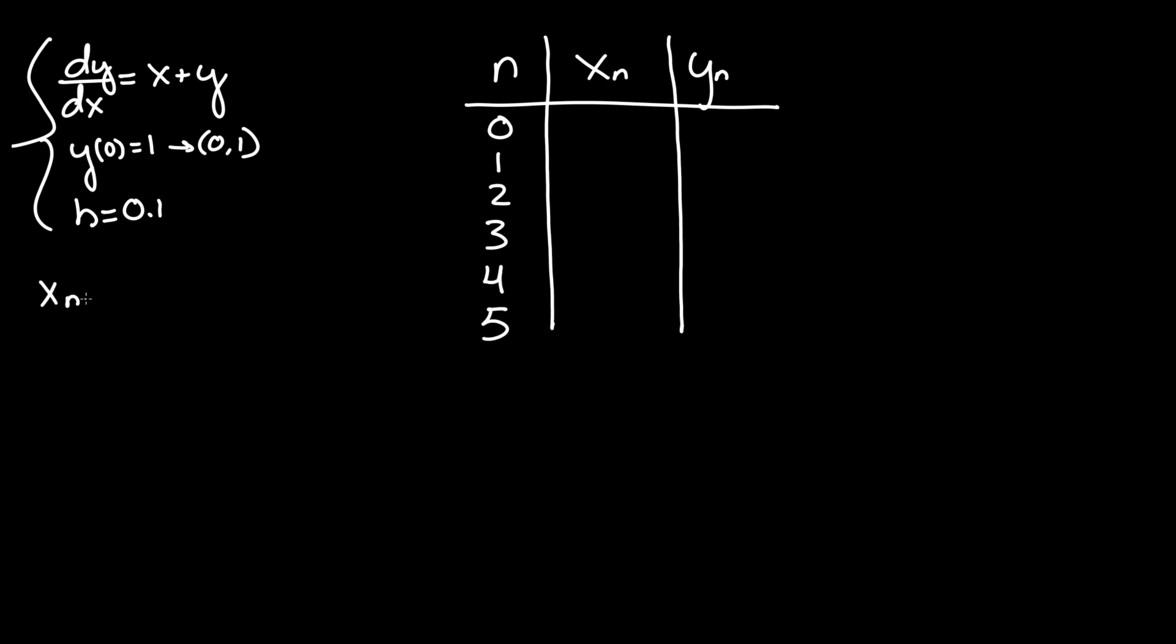We know that x_{n+1} = x_n + h. So x_n starts off at 0 when n = 0, since that's our initial value, and y(0) = 1. Using plus h in the equation, we get 0 + 0.1 = 0.1.